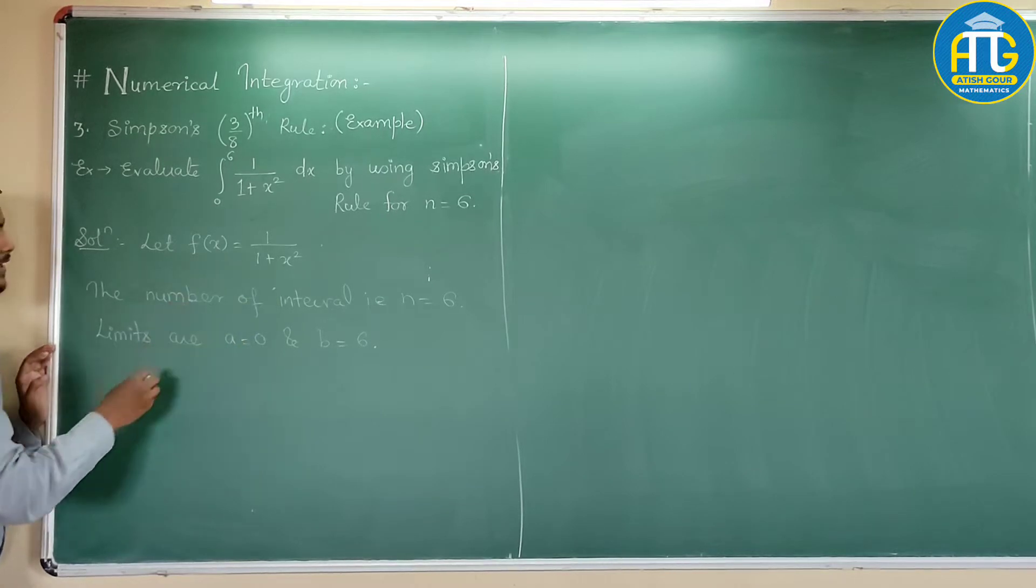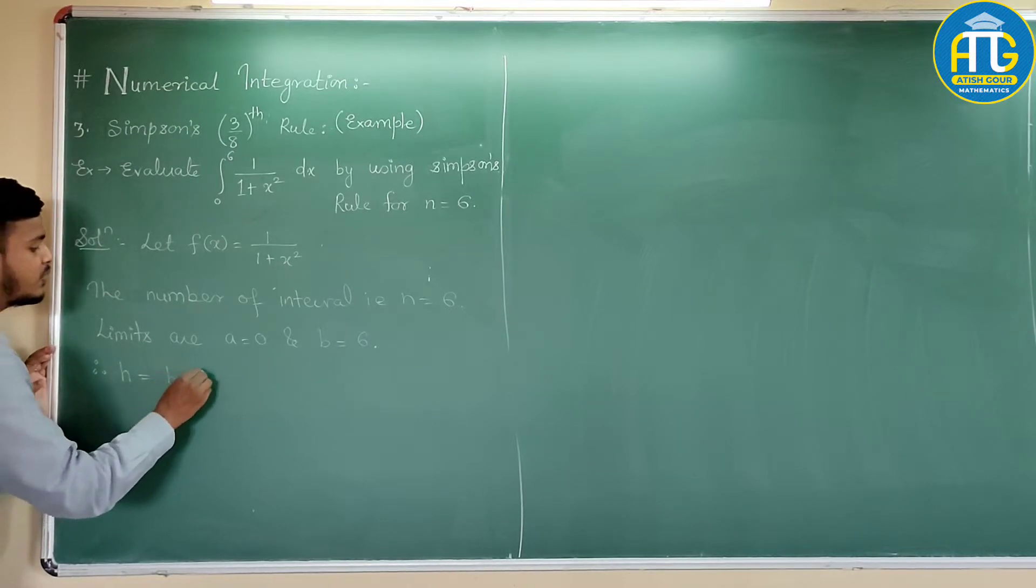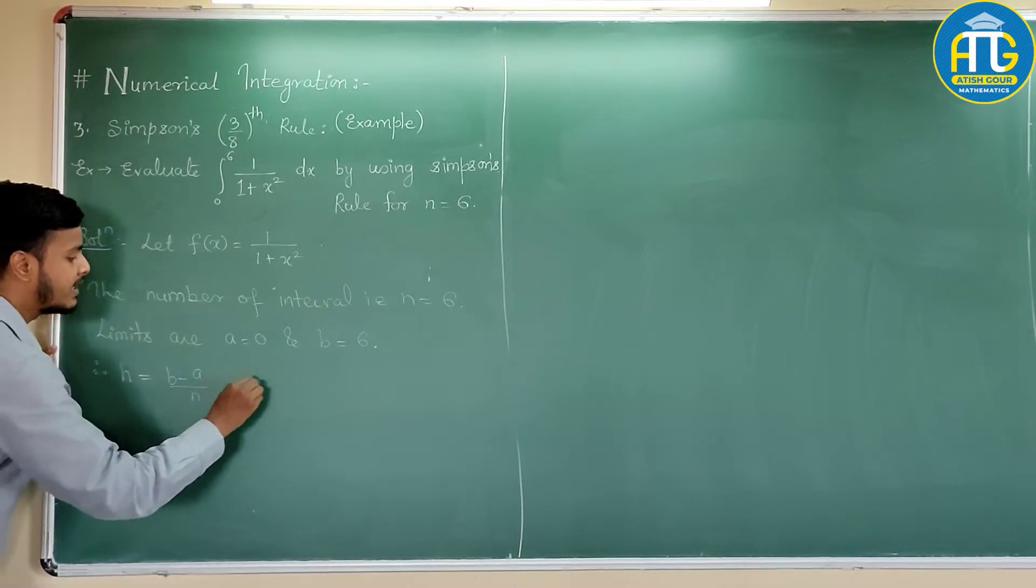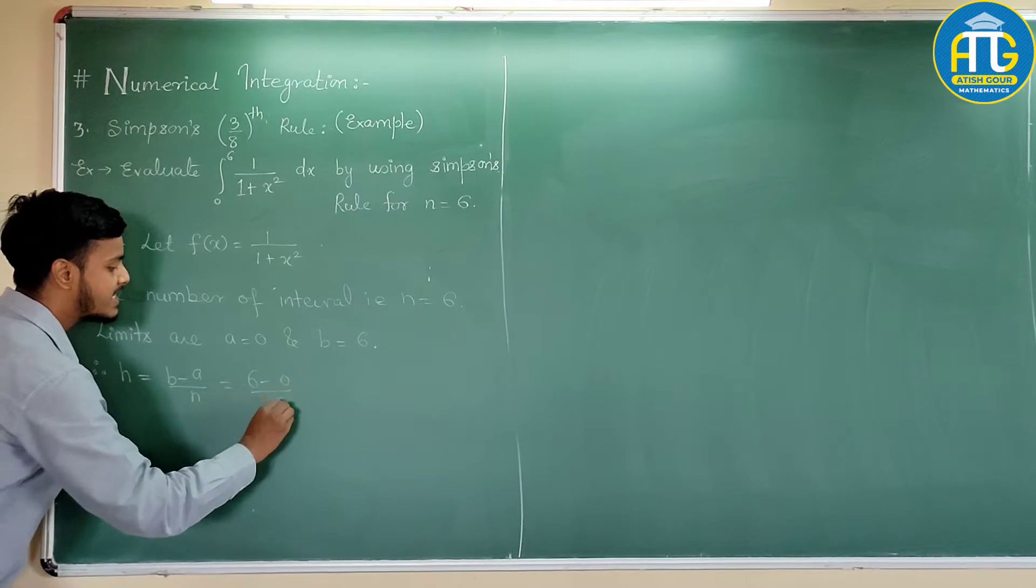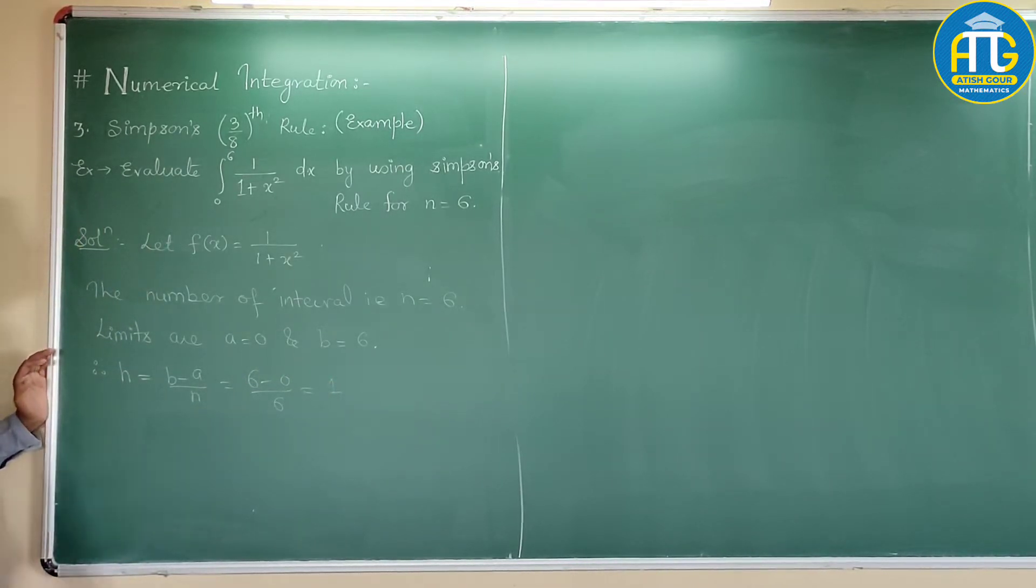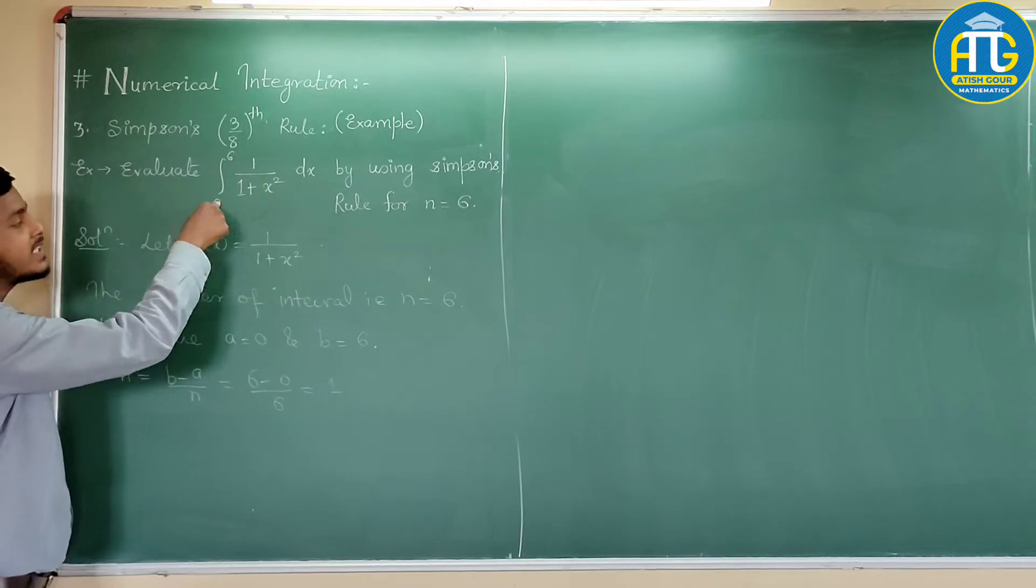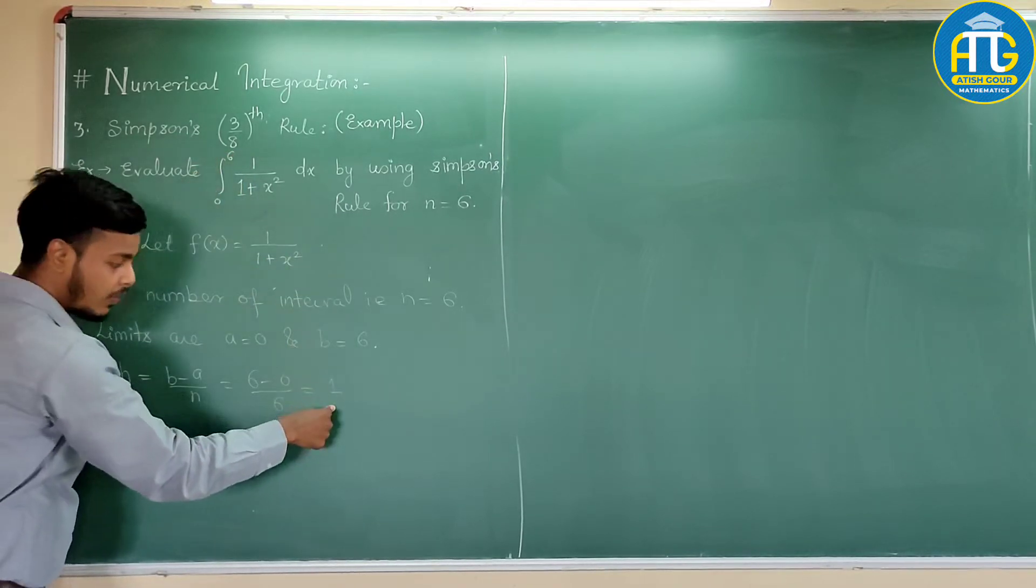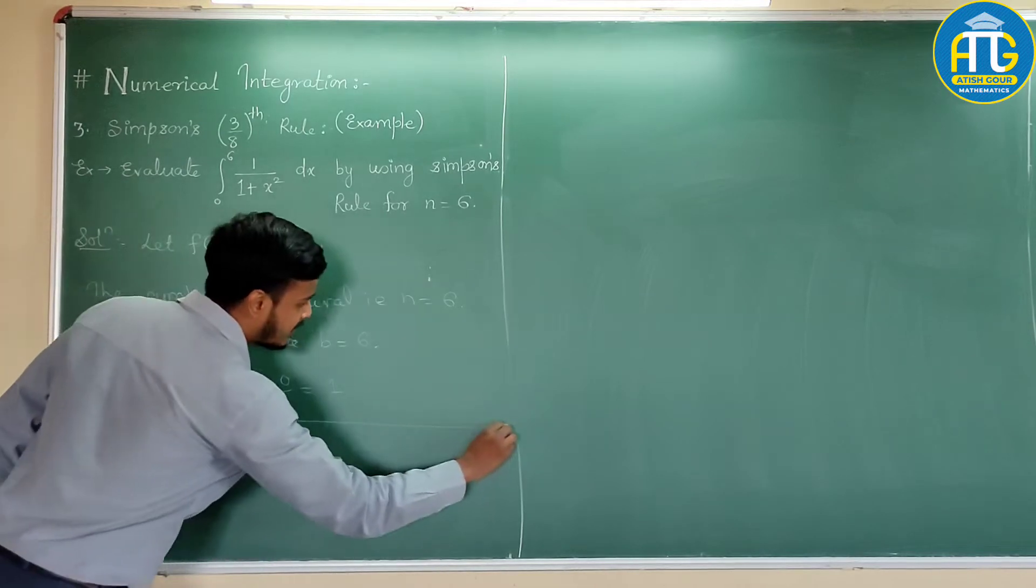Now, with the help of all this, we can find out the interval of differencing h. h equals b minus a by n. That is 6 minus 0 by 6, that is 1. So, we have the interval of differencing 1. So, we have values of x from 0 to 6 with the interval 1. So, let us draw the table.